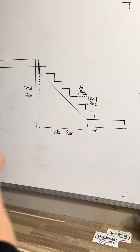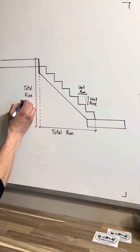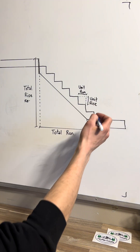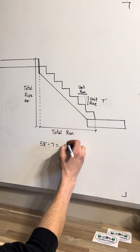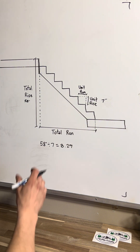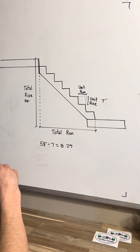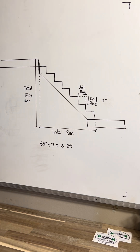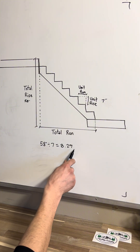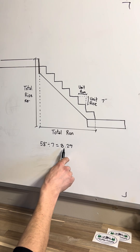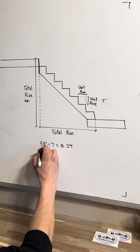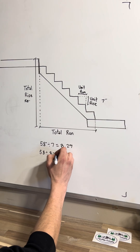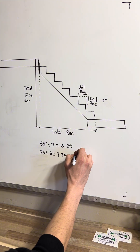Let's do the math to figure out our unit rise — that tells us how high each step is going to be. Let's say we have a total rise of 58 inches and we want a desired rise of around 7 inches. We do 58 divided by 7 and we get 8.29. So we divided our total rise by approximately how high we want each step to be, giving us 8.29 steps. Since we can't have 0.29 of a step, we round down to 8 rises. Now we do 58 divided by 8 and we get 7.25 — that is our unit rise.